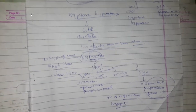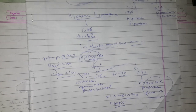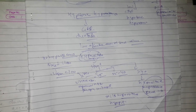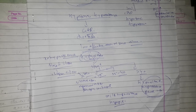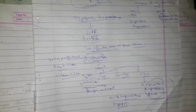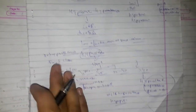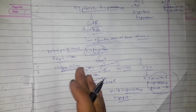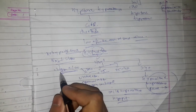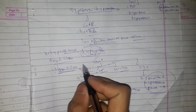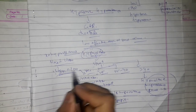If urine osmolality does not recover after therapy, consider whether the patient has consumed excess water — such as in psychogenic polydipsia or beer potomania. These conditions are associated with urine osmolality less than 100.